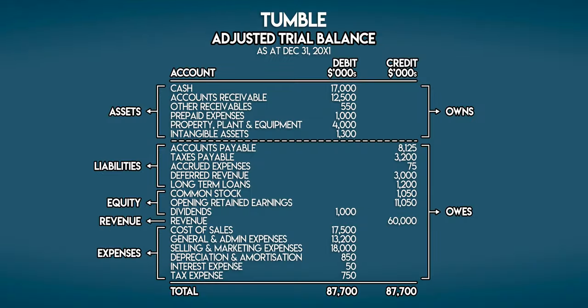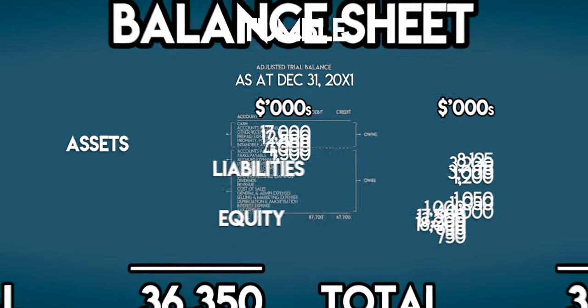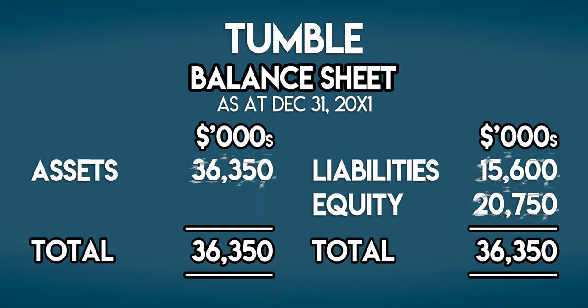What went wrong? We forgot to include Tumble's revenue and expenses. These are part of Tumble's retained earnings — its profits held for future use — which also sit in the equity section of its balance sheet. When we include them, total liabilities plus equity also add up to $36,350,000. So Tumble's basic balance sheet is in balance.